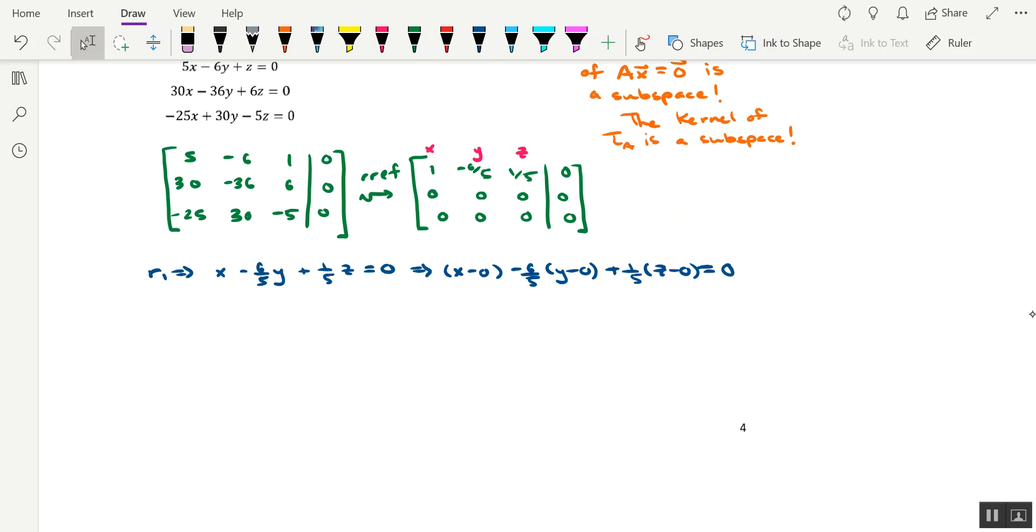So, it should be clear that our solution space is a plane. In particular, it's a plane that contains the point 0, 0, 0. So, based on this version of our solution, we can conclude that this is a plane through the origin.